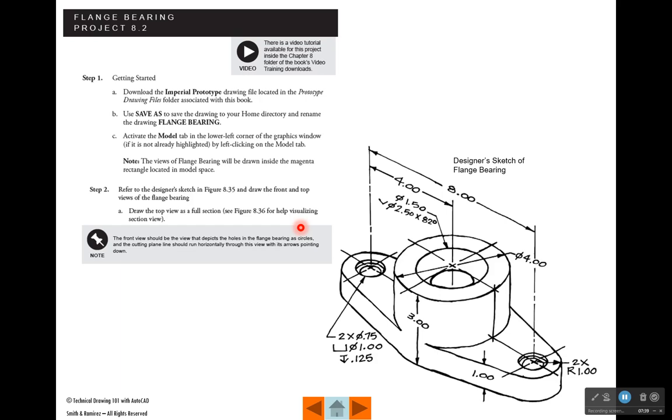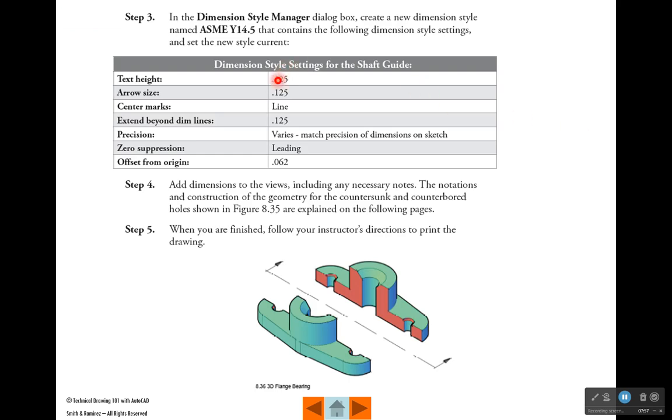Project 8.2 is the one that you're going to be doing for a grade. This is what the project looks like. You're going to draw the front view of this thing called the flange bearing and a top view of it. The top view is going to be a full section. You're going to also dimension it. So you're going to have to create a dimension style that you can name ASME Y14.5, and these are the settings for your text height, the arrow sizes, and so on. This image will help you visualize what the section view is going to look like.